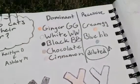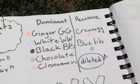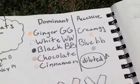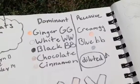But what about the colors in cats? Colors like ginger, white, and black are dominant, while diluted colors like blue, cream, and lilac are recessive.